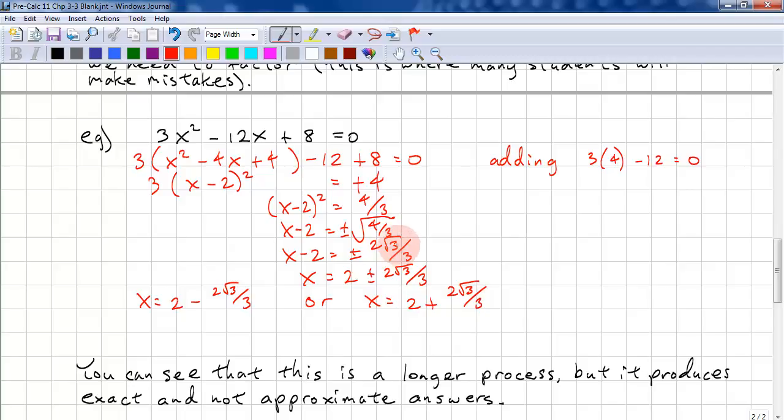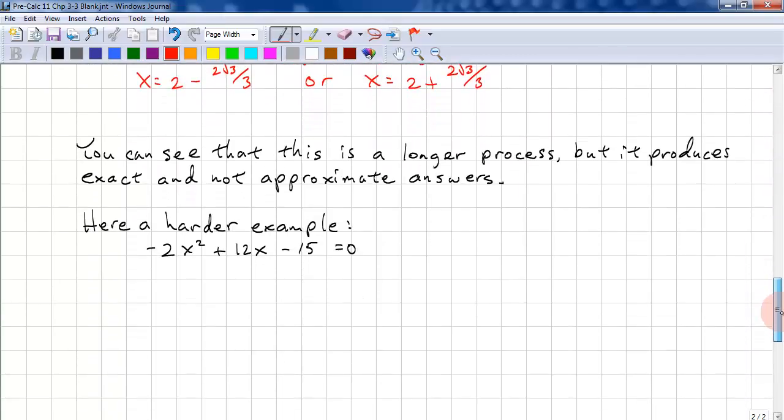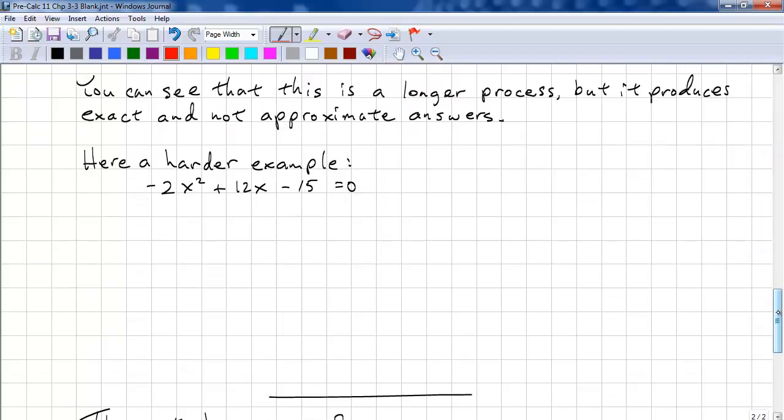Now we can bring the negative 2 over to the other side. x equals 2 plus or minus 2 root 3 over 3. x equals 2 minus 2 root 3 over 3. Or x equals 2 plus 2 root 3 over 3. And in case you didn't get this part, square root of 4 is 2. We need to rationalize the denominator, so we need to multiply the top by root 3. Root 3 on the bottom, it's root 3 times root 3. That's just 3. And this process is a little bit longer, but it produces exact results and not approximate answers. So it's easy to tell if you're using your calculator or doing the math by hand.